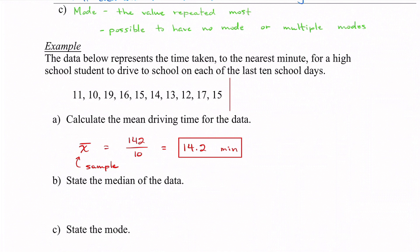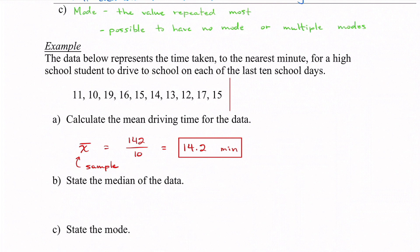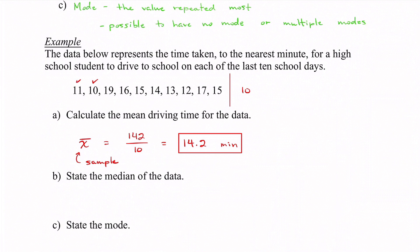For part B, we need to state the median. We have to put the numbers in order to find the middle. The smallest is 10, then 11, 12, 13, 14, 15, 15, 16, 17, and 19. Use the checkmarks to make sure you've gotten every single value — you should have 10 different numbers. To find the median we have to find the very middle.